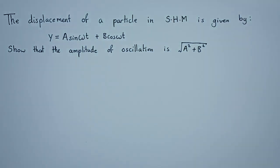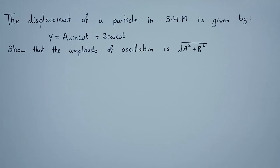The first thing we need to know is that this is a superposition of two simple harmonic motions having the same frequency. The superposition of two harmonic motions having the same frequency always results in a simple harmonic motion. The amplitude of the resulting SHM can be calculated using the parallelogram law of vector addition.